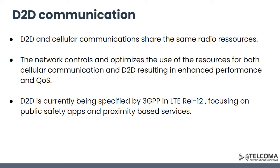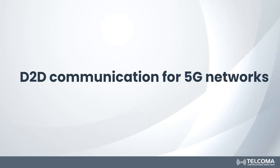Device to device and cellular communication share the same radio resources. The network controls and optimizes the use of resources for both cellular and D2D, which results in enhanced performance and quality of service. It is being specified in 3GPP releases with a focus on public safety applications and proximity based services.